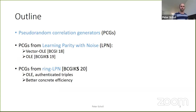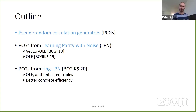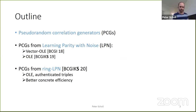As an outline, I'm going to start off by introducing the concept of pseudorandom correlation generators, or PCGs, then move on to a few different constructions. First, some based on learning parity with noise for vector OLE from the CCS 2018 paper, and then an extension getting correlations for OLE from Crypto last year. Then I'll move on to PCGs from the ring LPN assumption, which are improved variants giving OLE as well as authenticated triples for the SPDZ protocol — the first concretely efficient construction for SPDZ that should be competitive in practice.